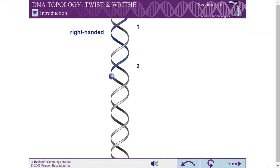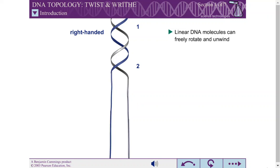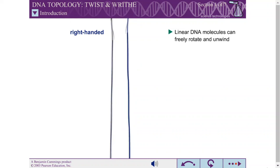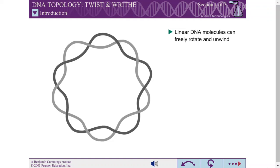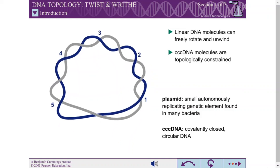Each of the chromosomes of eukaryotes is comprised of a single linear DNA molecule. Because their ends are free, linear DNA molecules can freely rotate to change the number of times the two chains of the double helix coil about one another. However, DNA molecules can also be circular. Examples of circular DNA molecules include most bacterial chromosomes, some viral chromosomes, and small bacterial genetic elements called plasmids. For such covalently closed circular DNA, the absolute number of times the chains coil about one another cannot change. These DNA molecules are said to be topologically constrained.